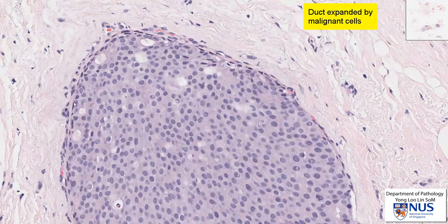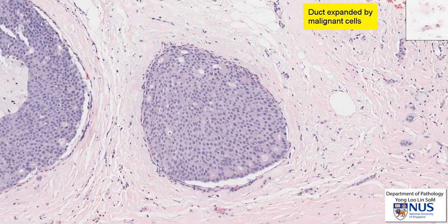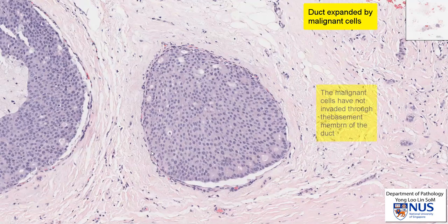These compressed cells are actually residual benign basal cells. We can confirm this by doing specific basal cell markers, such as P63, high molecular weight cytokeratins, or CK14, which would light up in the normal basal cells. The presence of a residual layer of basal cells tells us that this was an original preexisting duct, and more importantly, that this neoplastic process is still an in situ process — it has not invaded through the ductile basement membrane.